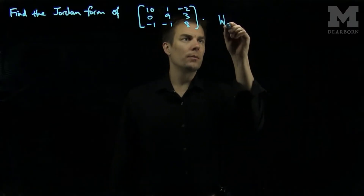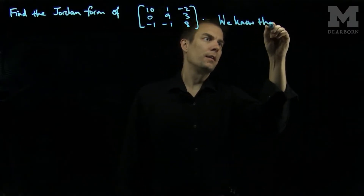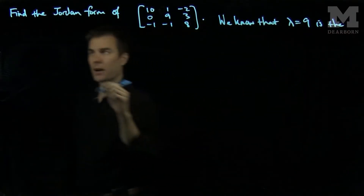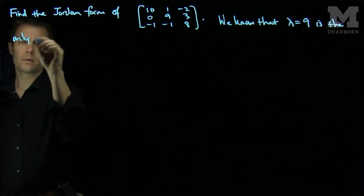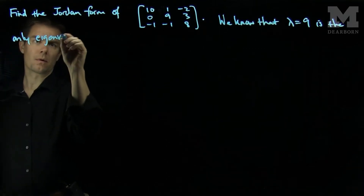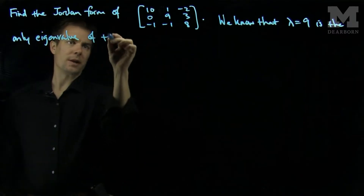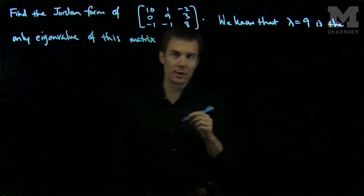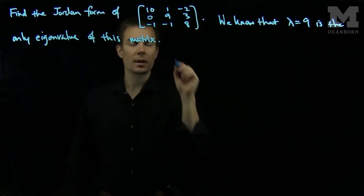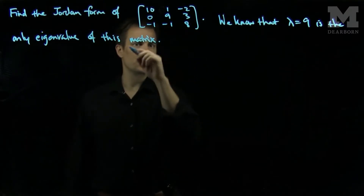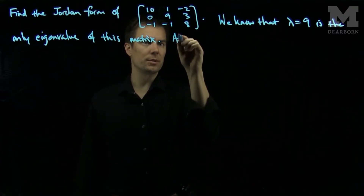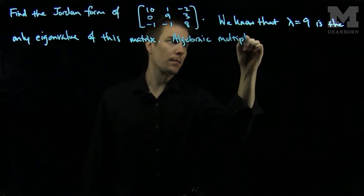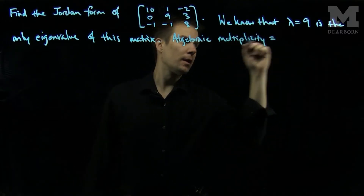We know that lambda equals 9 is the only eigenvalue of this matrix. You can check that yourself by computing the characteristic equation. We can also note that the algebraic multiplicity is equal to 3.